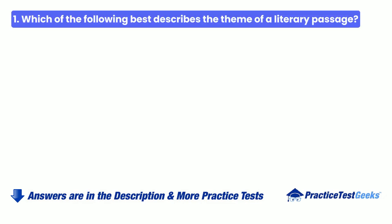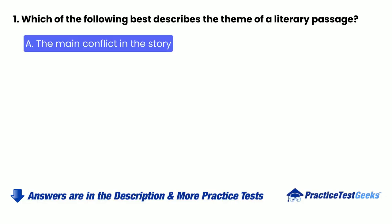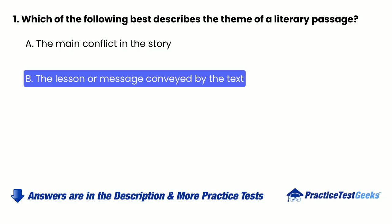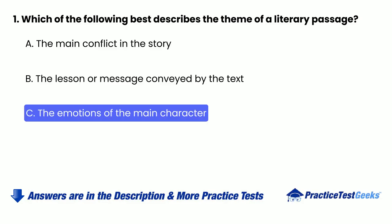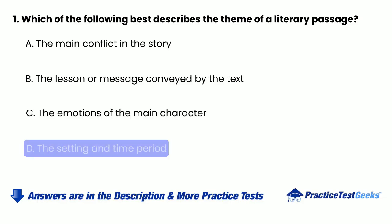1. Which of the following best describes the theme of a literary passage? A. The main conflict in the story. B. The lesson or message conveyed by the text. C. The emotions of the main character. D. The setting and time period.